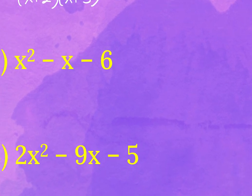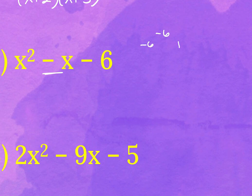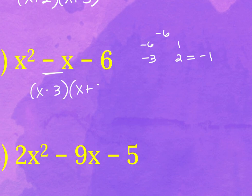For problem two, I'm looking for the factors of negative six that sum to negative one, and the bigger factor has to be negative based on the middle term. So negative six and positive one, or negative three and positive two — that's the one that gives you negative one. So I get x minus three and x plus two.